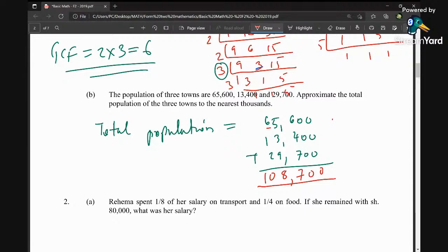We are supposed to approximate it to the nearest thousands. When being approximated to the nearest thousands, we are going to consider the number 8, and the number after 8 is greater than 5, so this is going to be approximately 109,000. That is the total population to the nearest thousand.